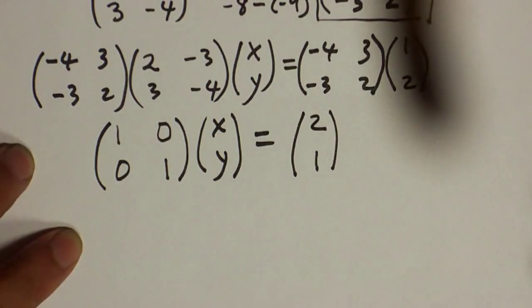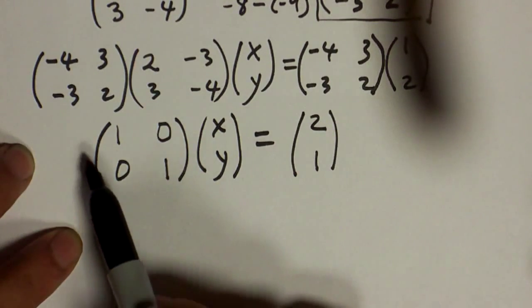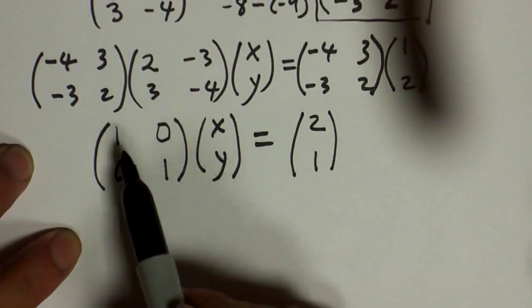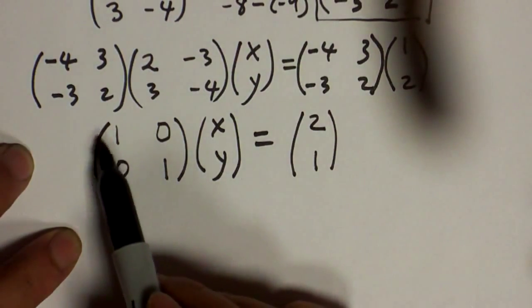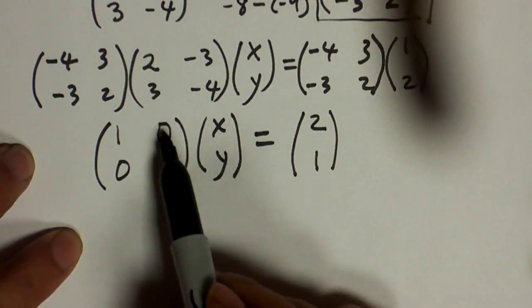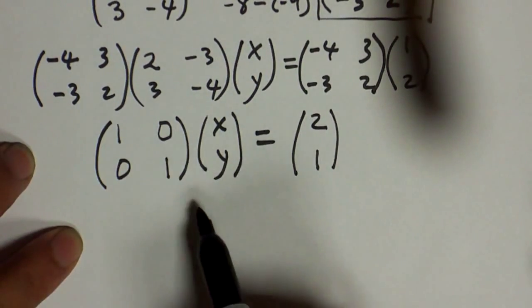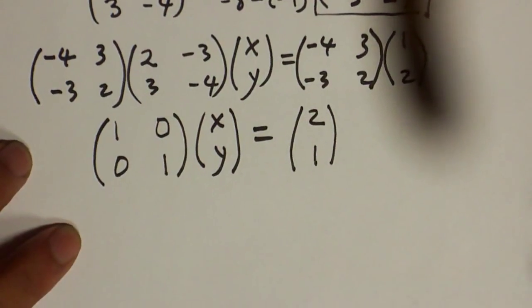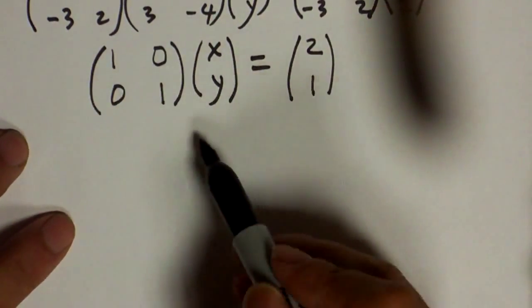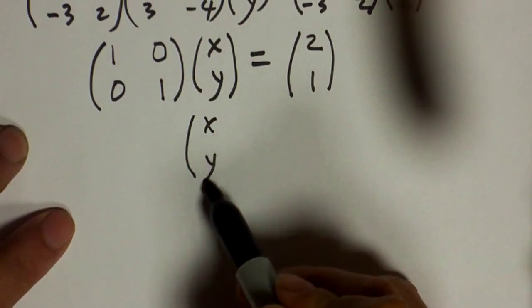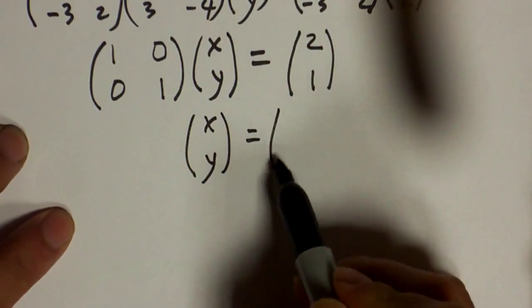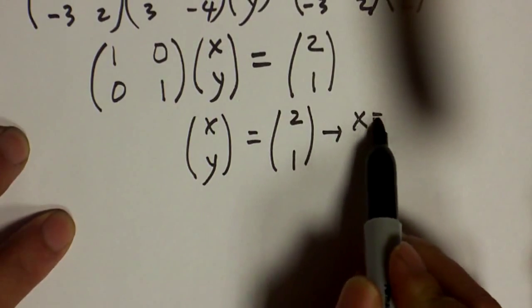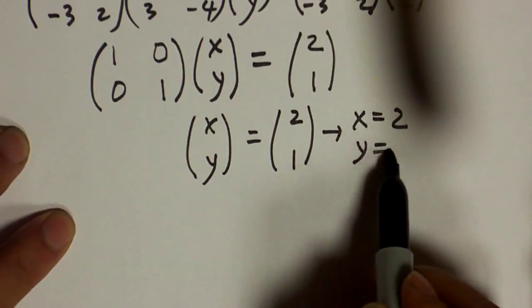We're almost close to the answer, because identity times anything is that matrix itself. The result can be written as [x; y] equal to [2; 1], which tells you that the solutions are x equal to 2 and y equal to 1.